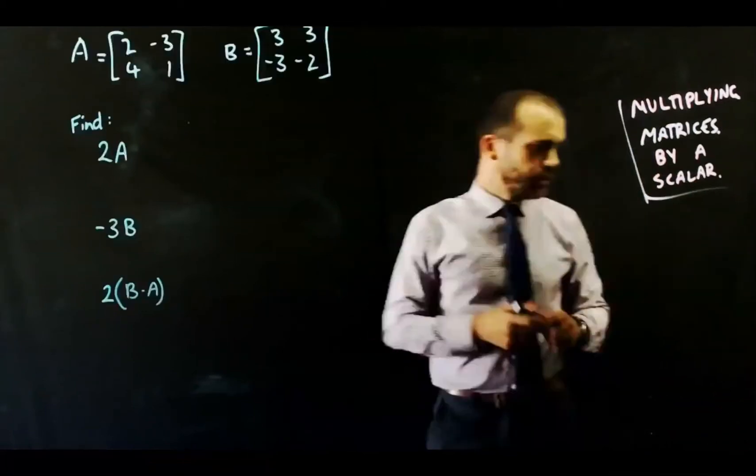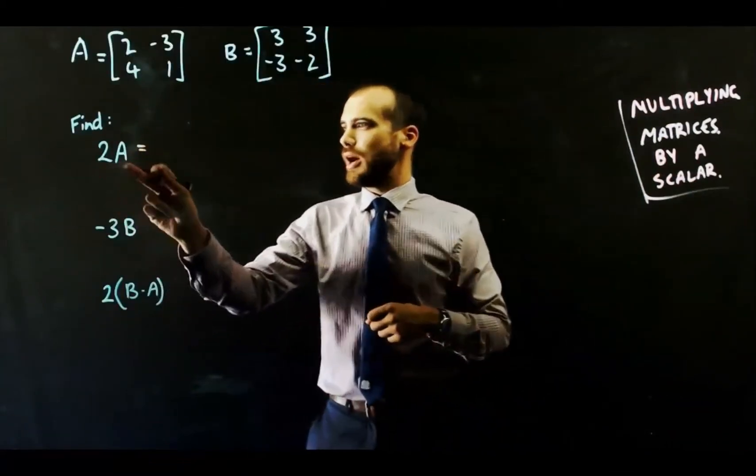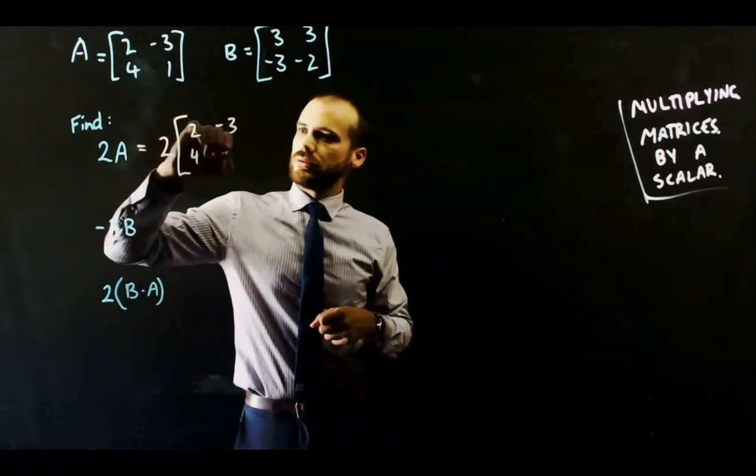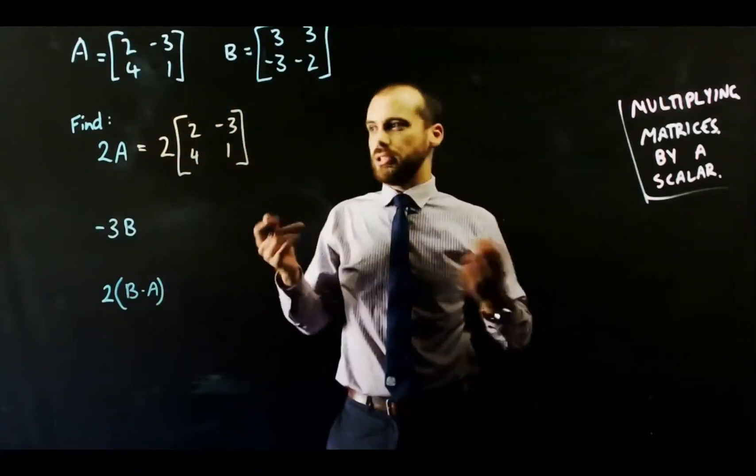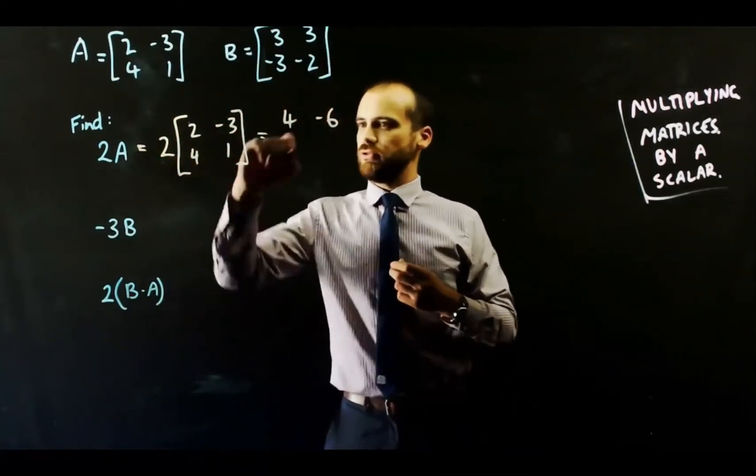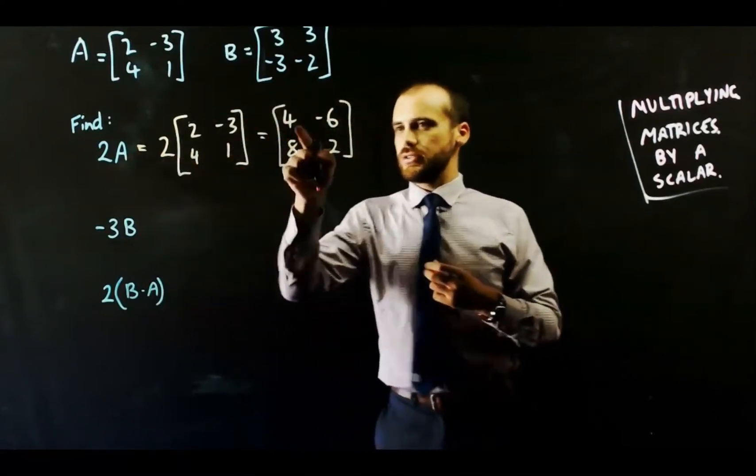Okay, let's multiply matrices by a scalar. So we've got two matrices again. Two times A. We just put two out the side of the A matrix, and then we multiply all of the elements in the A matrix by two.